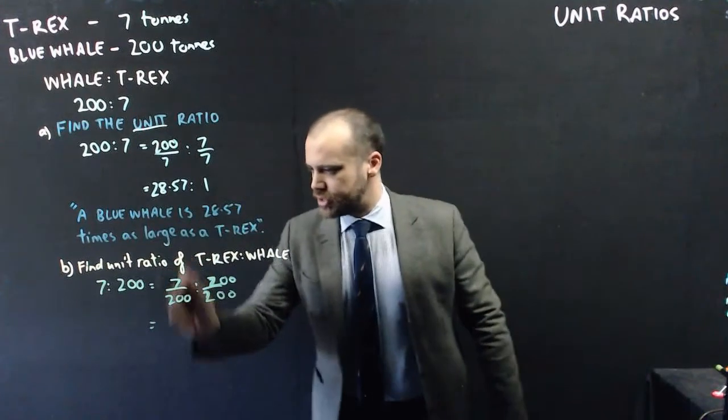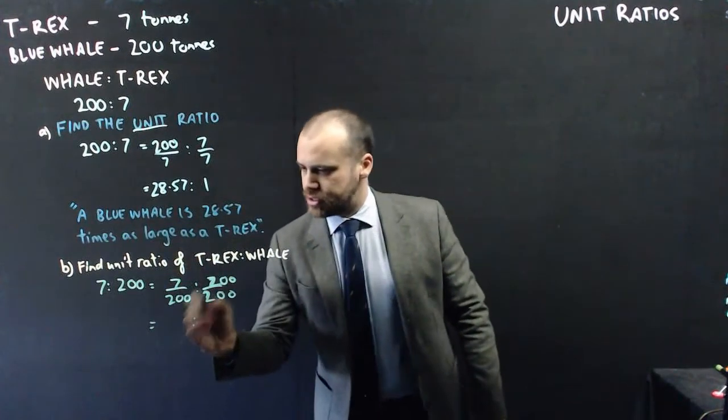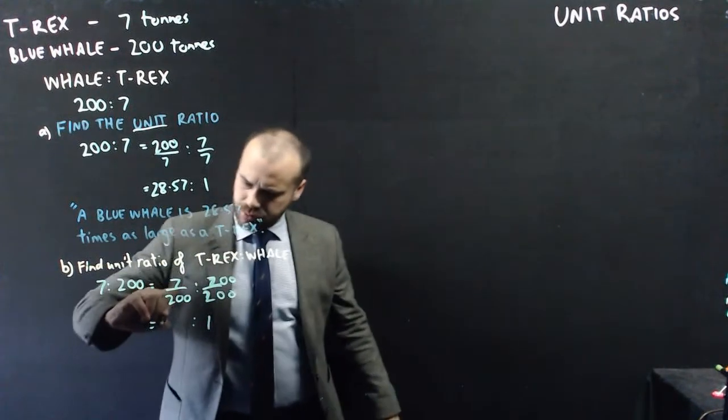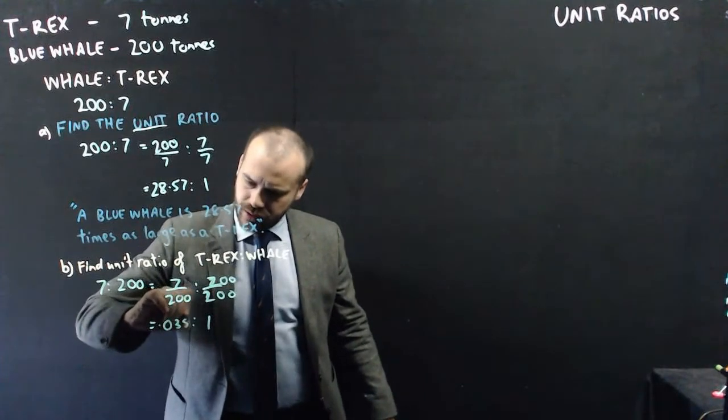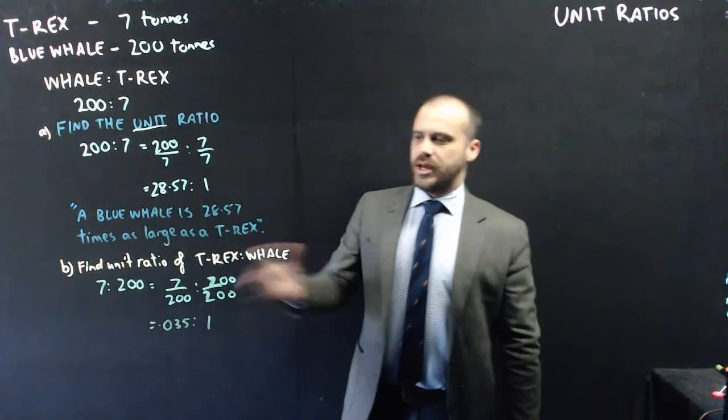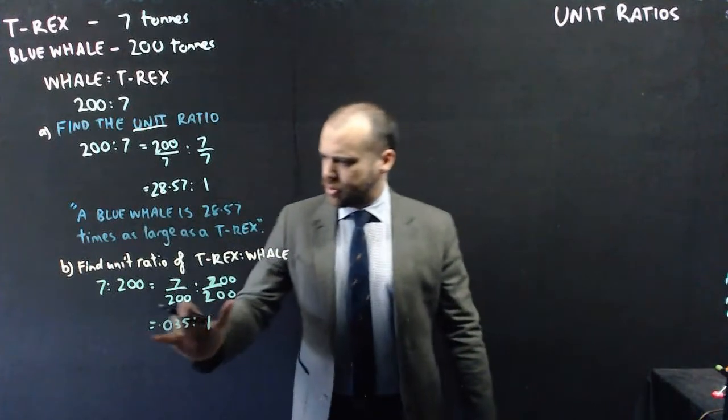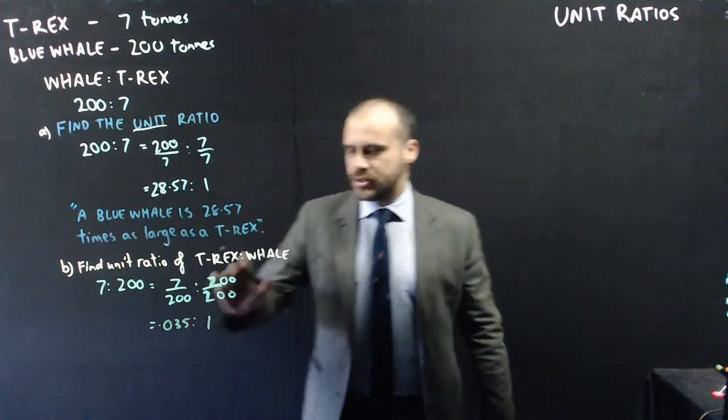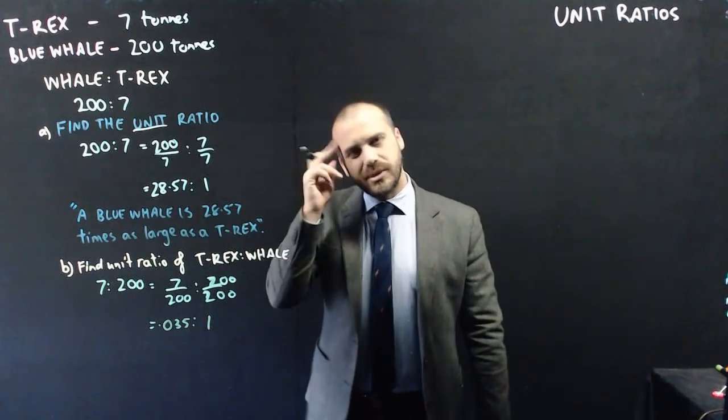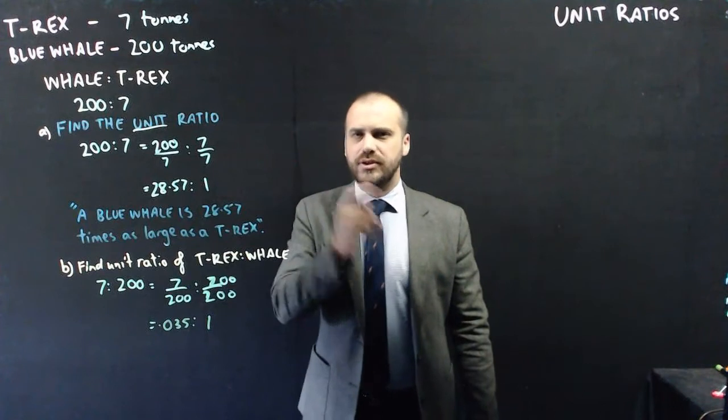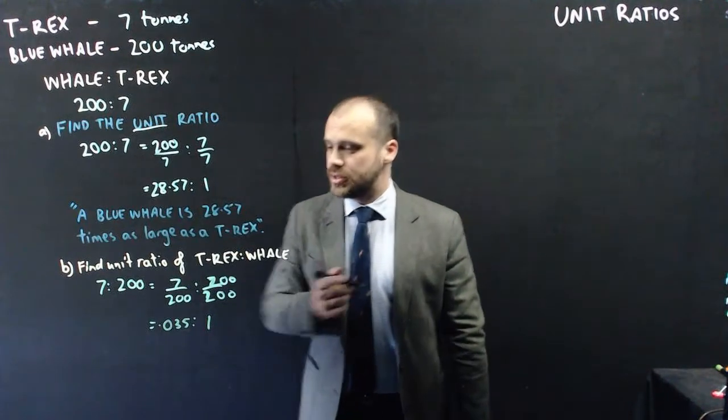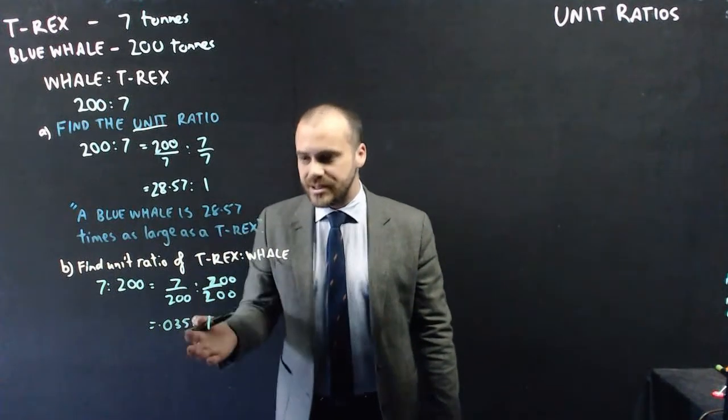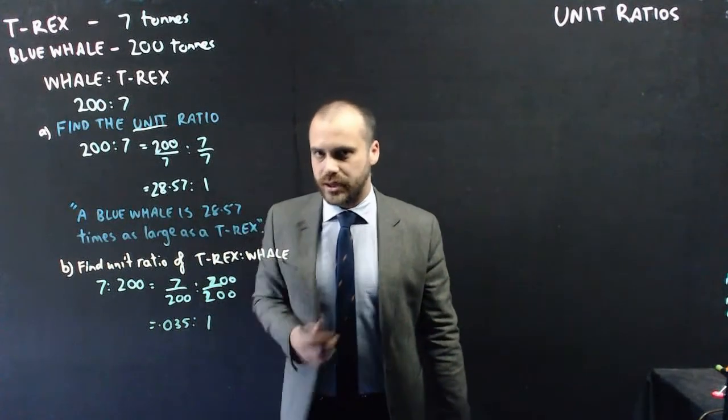Now when I do that, this bit, I'll get back to that in a second, this bit, 200 over 200 is 1. I'm going to need a calculator for that. It's 0.035. Now, how do we interpret this result? Well, 0.035 is to 1 is the ratio of T-Rex to whale. Still not making a lot of sense in my head. What about if I think in terms of percentages? This says that a T-Rex is 3.5% the size of a whale.